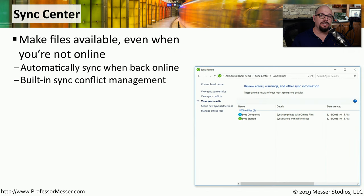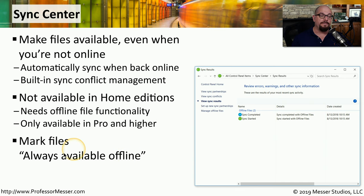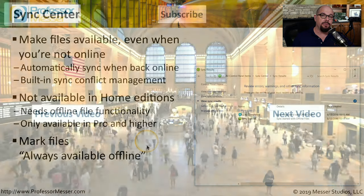For people who need access to data when they're not directly connected to their network, there's a feature in Windows called the Sync Center. This makes files available to you even when you're not directly connected to the server that provides those files, allowing you to take your laptop away from the network, work on those documents, and when you return and reconnect, the Sync Center will automatically synchronize that data for you. This feature is only available in the Pro edition of Windows or higher, so if you're running a home edition you don't have access to it. To use this capability, you would mark a file in the file properties as always available offline, and then when you leave the network you'll still have access to that file and be able to synchronize the next time you connect.